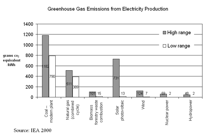Renewable energy flows involve natural phenomena such as sunlight, wind, rain, tides, plant growth, and geothermal heat. As the International Energy Agency explains, renewable energy is derived from natural processes that are replenished constantly. In its various forms, it derives directly from the sun, or from heat generated deep within the earth. Included in the definition is electricity and heat generated from solar, wind, ocean, hydropower, biomass, geothermal resources, and biofuels and hydrogen derived from renewable resources.